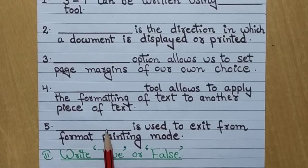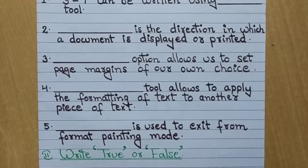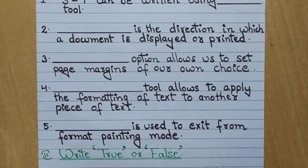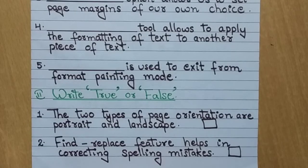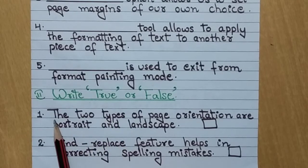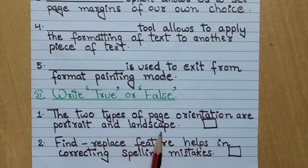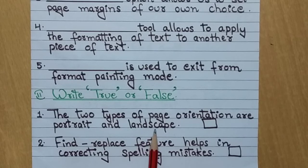Now we will move on to the true or false. In this what you have to do is if the statement is correct or it is true then you will write T. If the statement is false yaani galat hai, it is incorrect, then you will write F. True ke liye aapko T, false ke liye you will write F. The first one is the two types of page orientation are portrait and landscape. This statement is true or false, you will mention in this box.